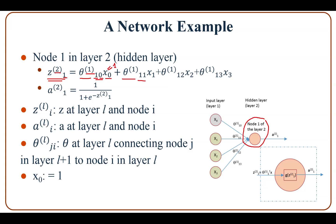The full expression is: z²₁ = theta¹₁₀ · x₀ + theta¹₁₁ · x₁ + theta¹₁₂ · x₂ + theta¹₁₃ · x₃. We can also write this in vector form: z²₁ = theta¹₁ · a¹. The output a²₁ is a non-linear function g of z²₁.